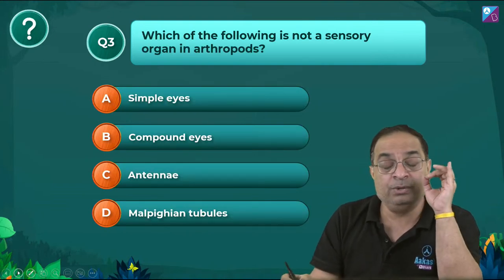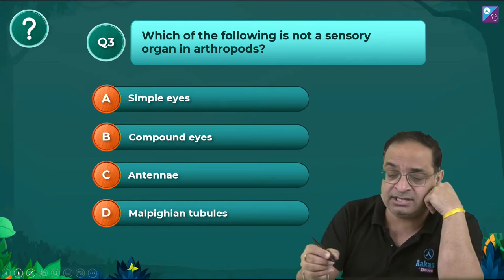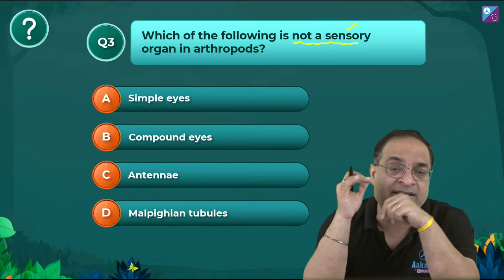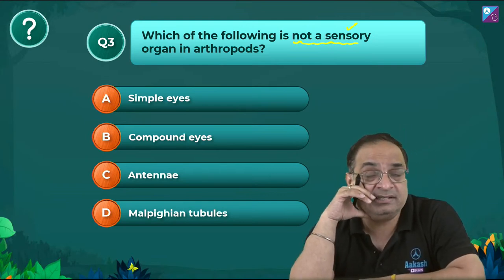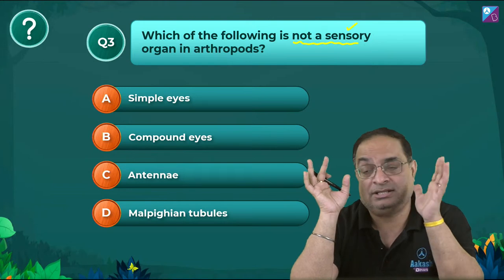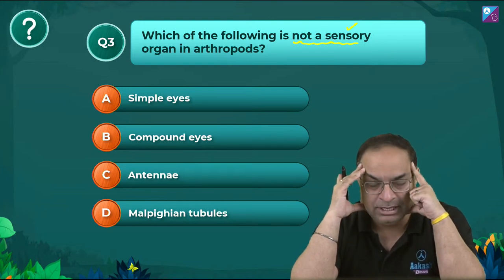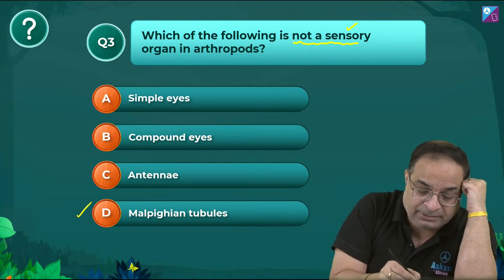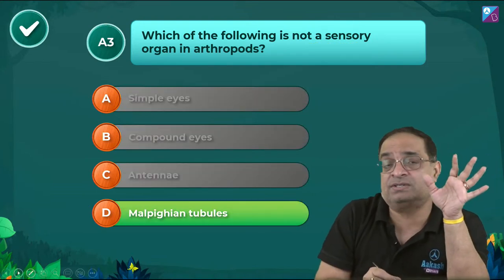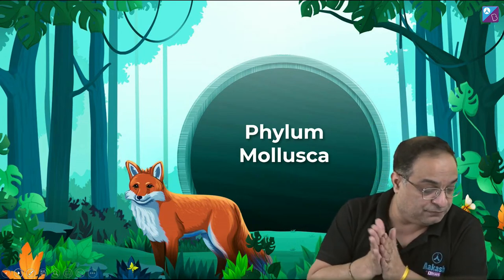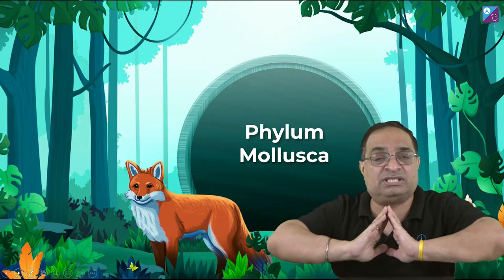Question 3: Which of the following is NOT a sensory organ in arthropods? Options: simple eyes, compound eyes, antennae, Malpighian tubules. Malpighian tubules are excretory structures, not sensory — that is the correct answer (D). With this, we have finished Phylum Arthropoda — the largest phylum of the Animal Kingdom, with over two-thirds of all named species on Earth being arthropods.